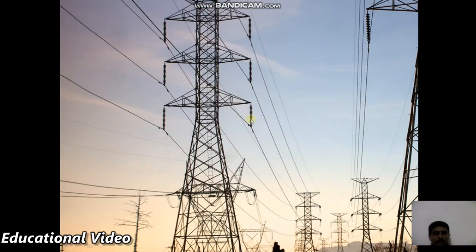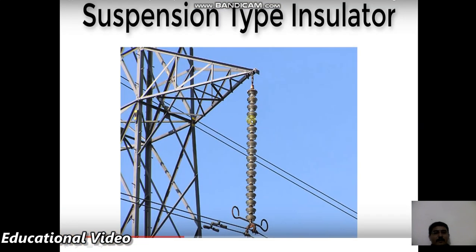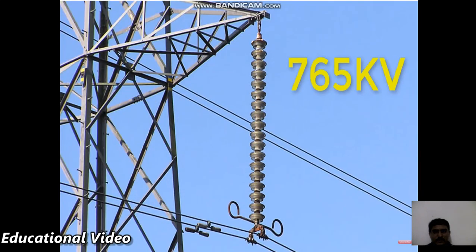The suspension type insulator is formed using a string of discs and is most widely used for transmission purposes. With this suspension string, we can achieve voltages up to 765 kV, meaning the line can withstand a maximum voltage of 765 kV.